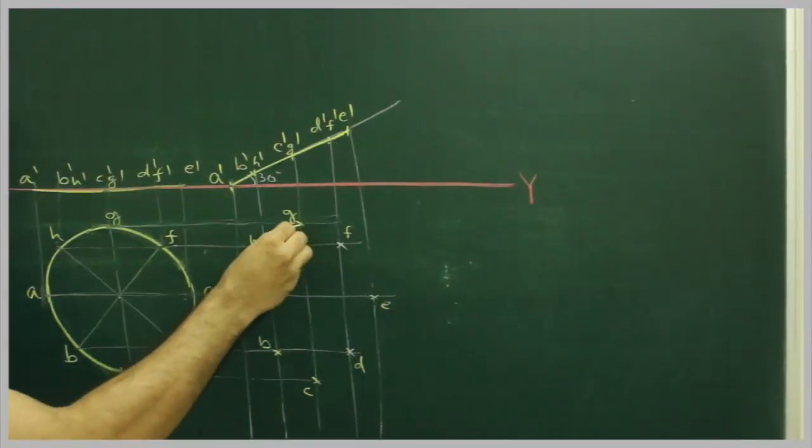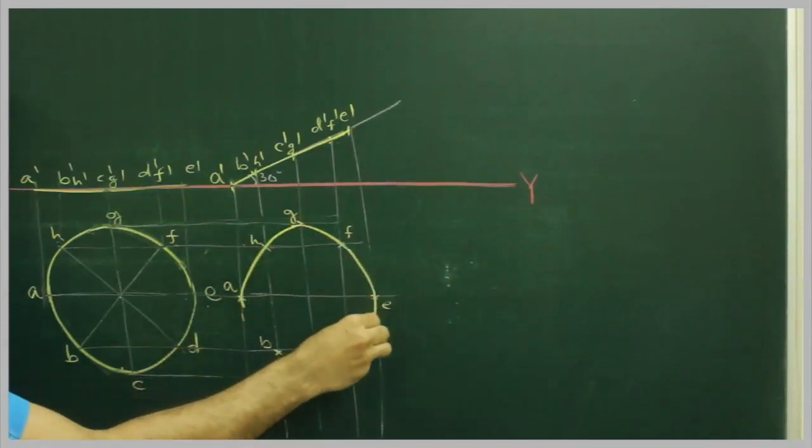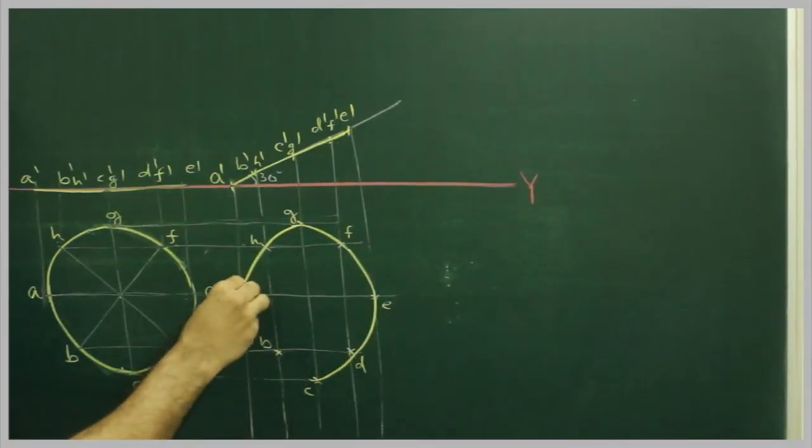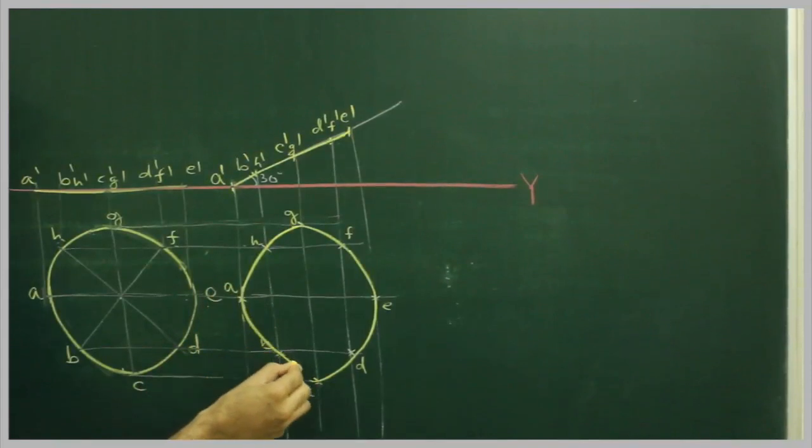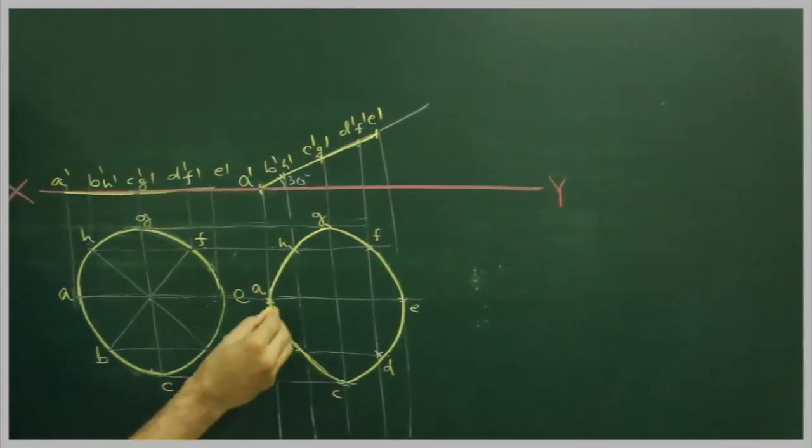Then join all these points with freehand. This is how the circular plate will look when it is inclined at 30 degrees to horizontal.